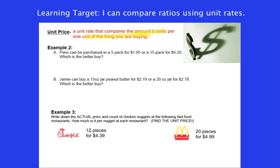A unit rate that compares the amount it costs for one thing that you're buying. A lot of times, you know, they throw in these large amounts of things that you can buy, especially if you go to Sam's Club or Costco. But it's not very useful unless you figure out what it costs per one of those items. So here, we're just going to look at a couple examples. And we're going to look at a real life example of chicken nuggets.